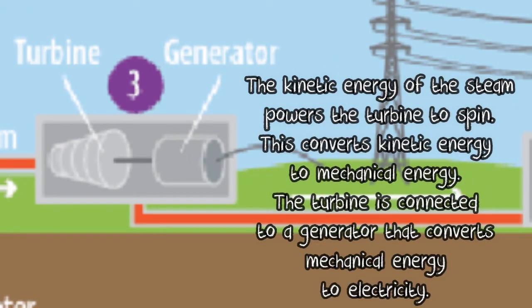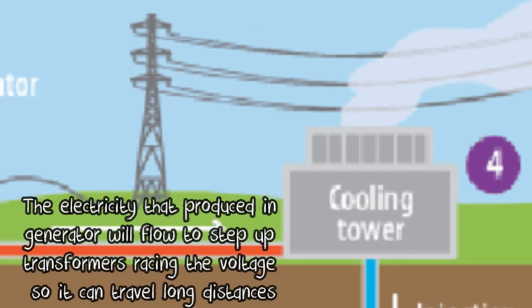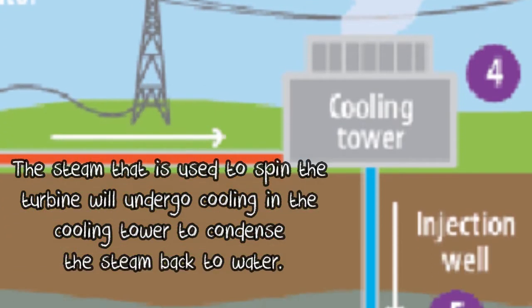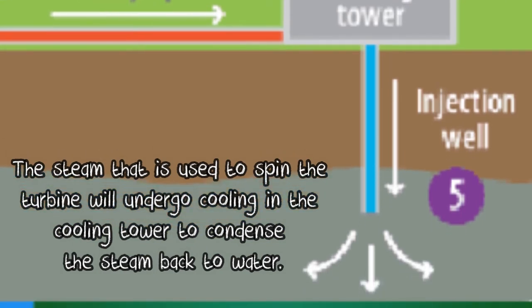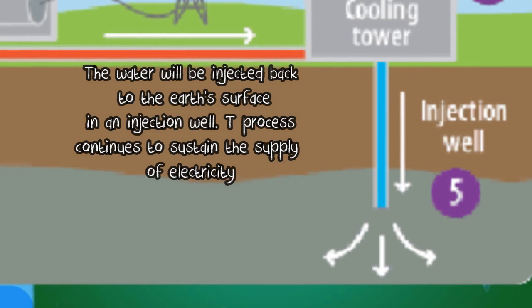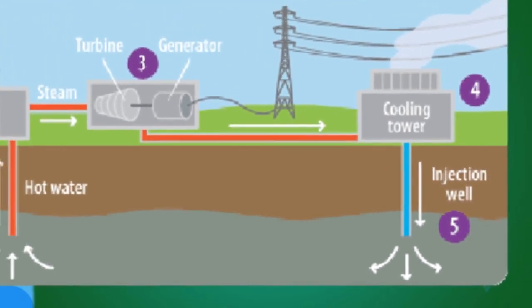The kinetic energy of the steam powers the turbine to spin, converting kinetic energy to mechanical energy. The turbine is connected to a generator that converts mechanical energy to electricity. The electricity produced flows to step-up transformers, raising the voltage so it can travel long distances. The steam used to spin the turbine undergoes cooling in the cooling tower to condense back to water, which is then injected back into the earth via an injection well. This process continues to sustain the supply of electricity.